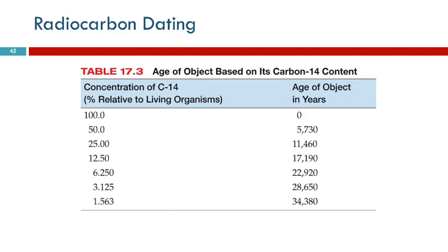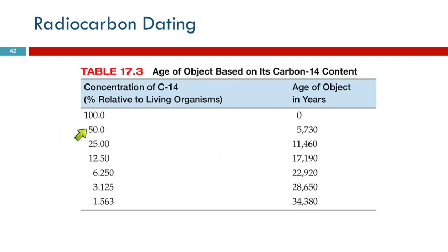When we talk about age here, we're talking about age when the organism died. If it just died, the concentration of carbon-14 relative to living organisms is the same — 100%. After one half-life of carbon-14, the concentration in that dead thing is 50% of what's in a living organism. After two half-lives, it's 25%. So each half-life — each 5,730 years — the percentage gets cut in half.